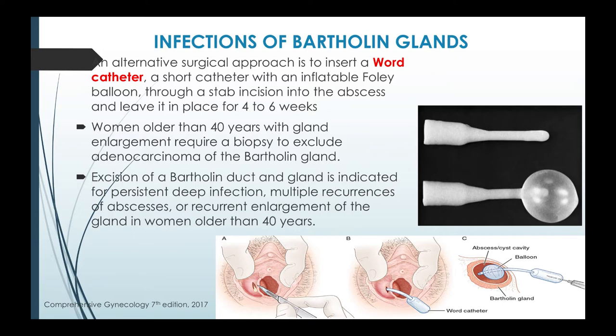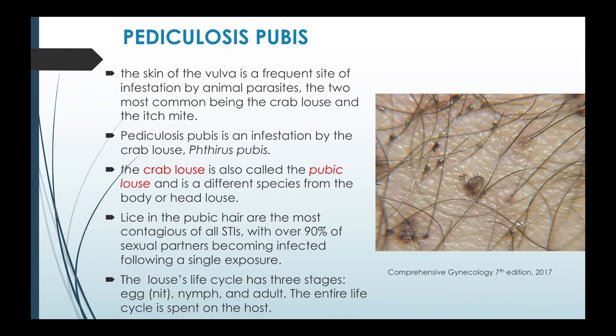Next we have pediculosis pubis. The skin of the vulva is a frequent site of infestation by animal parasites, the two most common being the crab louse and the itch mite. Pediculosis pubis is an infestation of the crab louse, or Phthirus pubis. The crab louse is also called the pubic louse and is a different species from the body or head louse. Lice in the pubic hair are the most contagious of all STIs, with over 90 percent of sexual partners becoming infected following a single exposure. The louse's life cycle has three stages: the egg or nit, the nymph, and the adult — the entire life cycle is spent on the host.